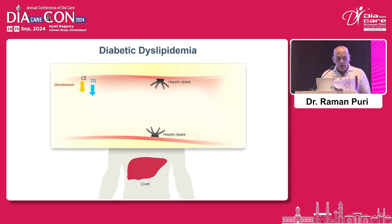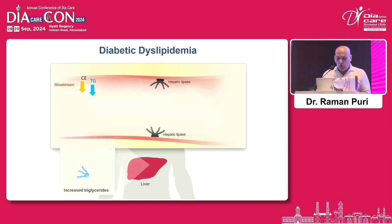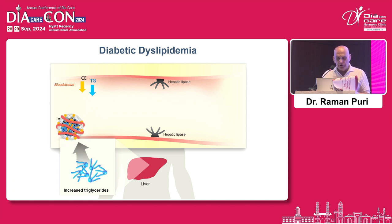Now I'll give you an animation of how you get diabetic dyslipidemia — high triglyceride, low HDL and small dense LDL particle. Diabetes basically is insulin resistance. Whenever there is insulin resistance, there is an increase in VLDL particles. Another important feature of insulin resistance is that there is inhibition of lipoprotein lipase because there is higher ApoC3 level.